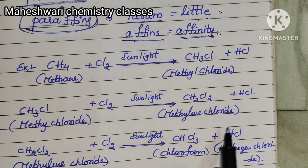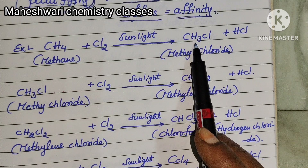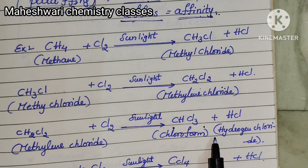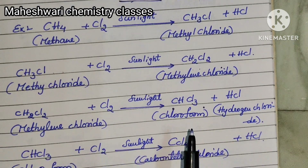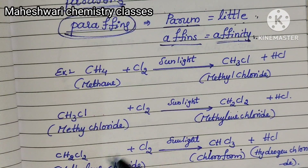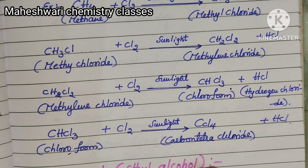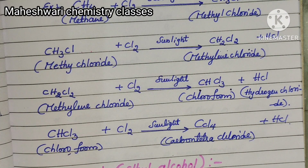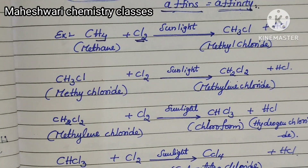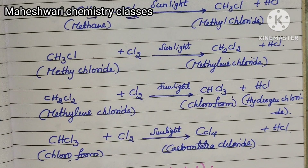In the photolytic substitution of methane: methane reacts with chlorine in the presence of sunlight, stepwise forming CH₃Cl, then CH₂Cl₂, then CHCl₃ (chloroform), and finally CCl₄ (carbon tetrachloride). All hydrogen atoms are progressively substituted with chlorine atoms. This is an example of a substitution reaction — methane's photolytic reaction.